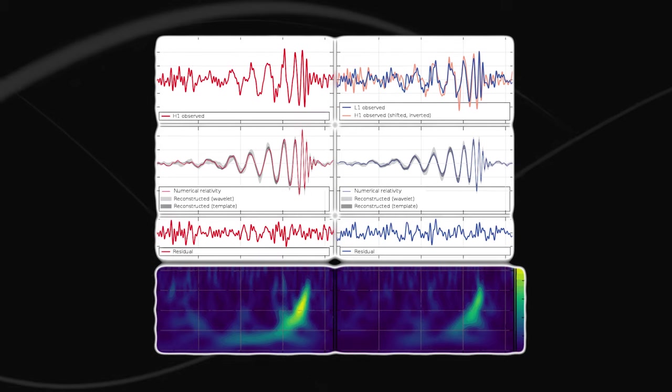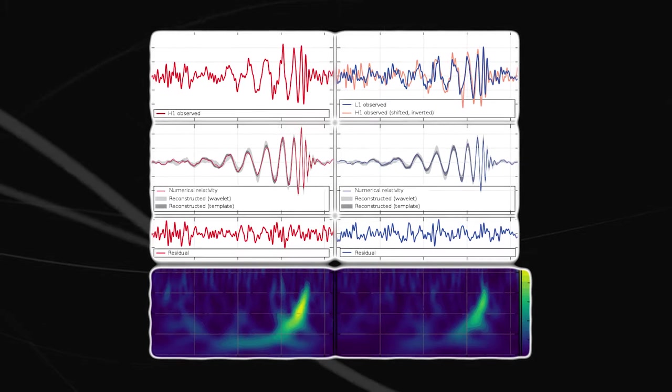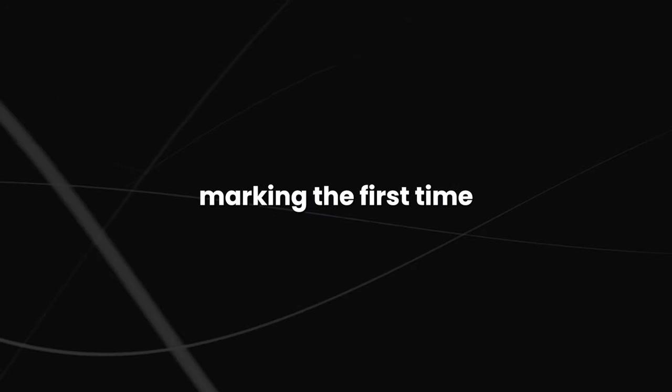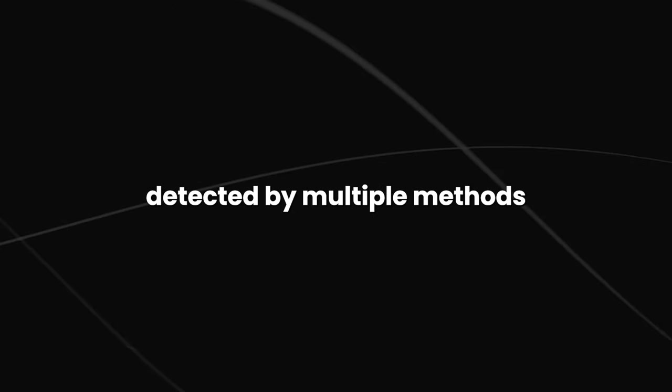In 2017, a gravitational wave event was detected that matched the predicted characteristics of a neutron star merger. This was later confirmed by other telescopes, marking the first time that a gravitational wave event was independently detected by multiple methods.